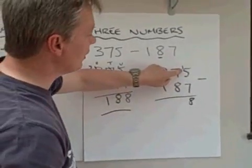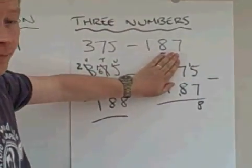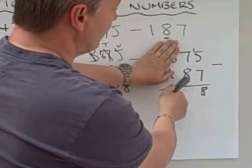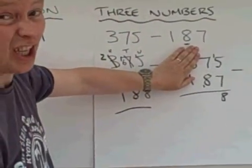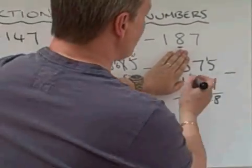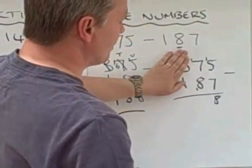But because I borrowed it, I'm going to pay it back by putting it there. So I've now got 7, take away 9, which I can't do. So I'm going to also have to borrow that, and that becomes 17. 17 take away 9.